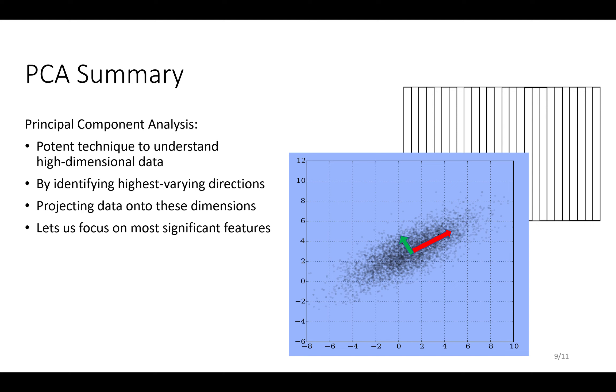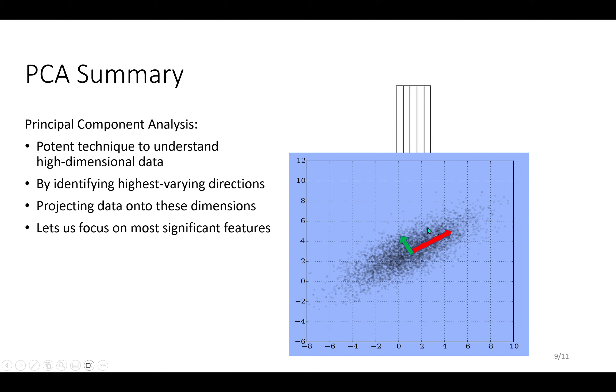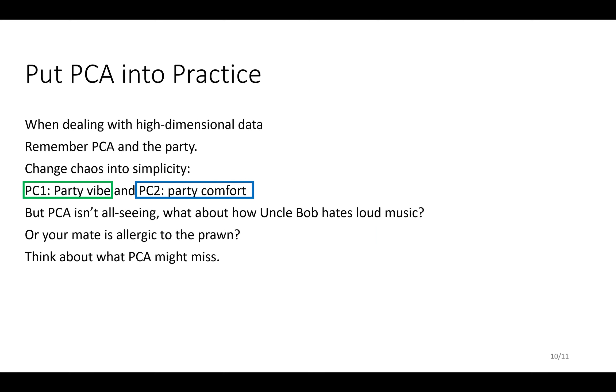In summary, principal component analysis: you have masses of data, it's a powerful technique that can reduce the size of the data. It just lets you focus on the most important directions of variance of the data and rotates to different axes so you just have a few variables to worry about.